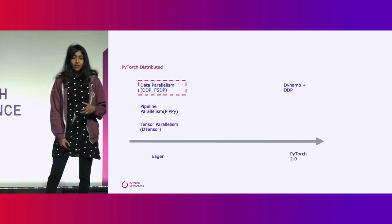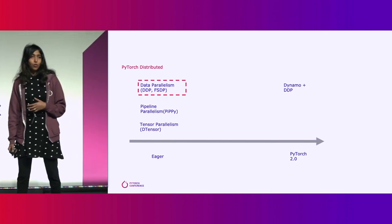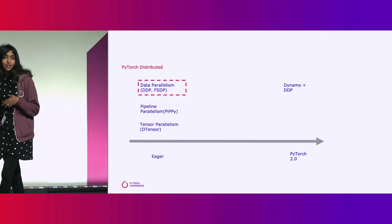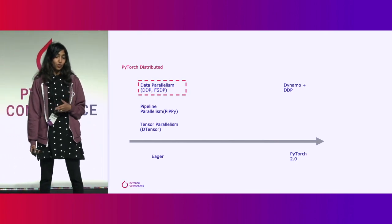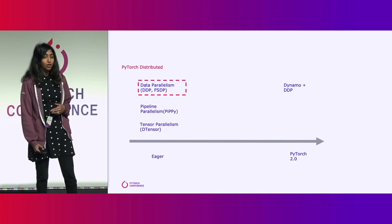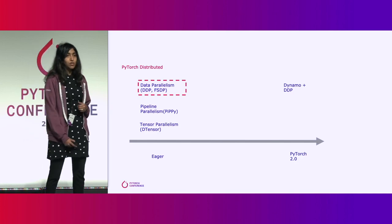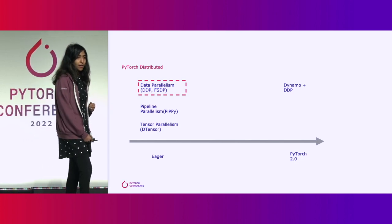Moving from Eager to PyTorch 2, we've enhanced our existing APIs, added new ones, and also added Dynamo support for DDP.